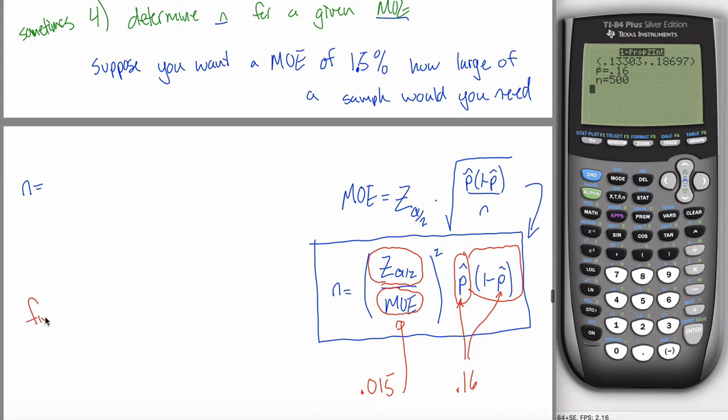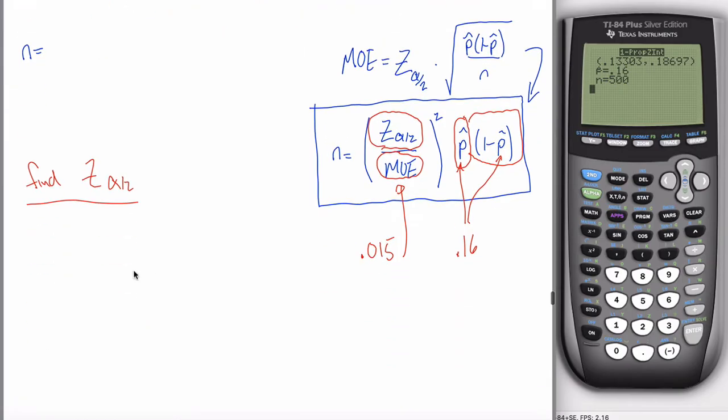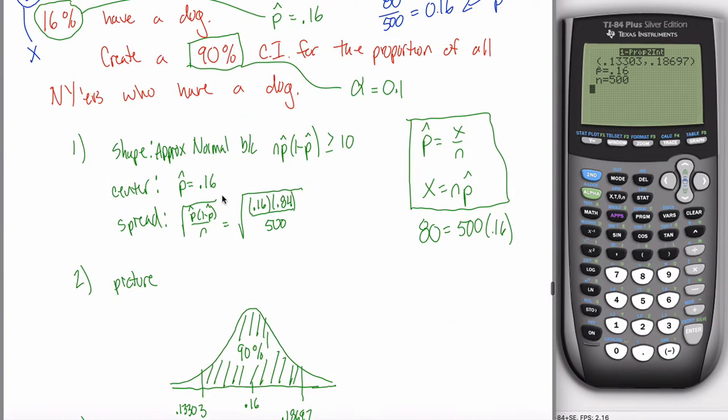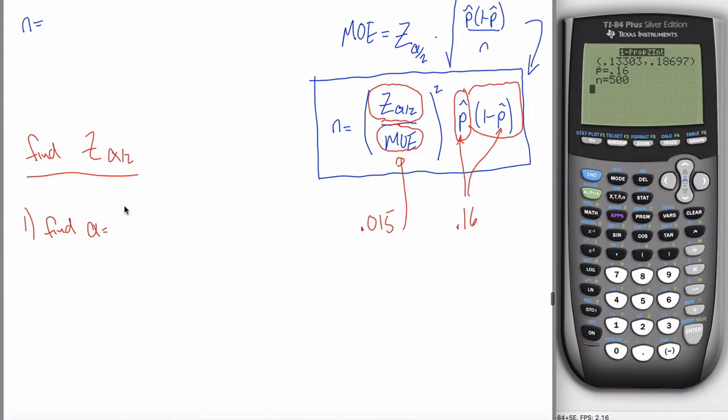As a reminder, the way you find Z with little alpha over 2 in the subscript is a three-step process. Step one was to find alpha. Alpha is given to you in the problem, typically not explicitly. Instead, it tells you the level of confidence was 90%, and that tells you that alpha is 10% because alpha is always 1 minus your level of confidence. So your first step would be to find alpha. That's 10%. Step two is find alpha divided by 2. Divide that number by 2.